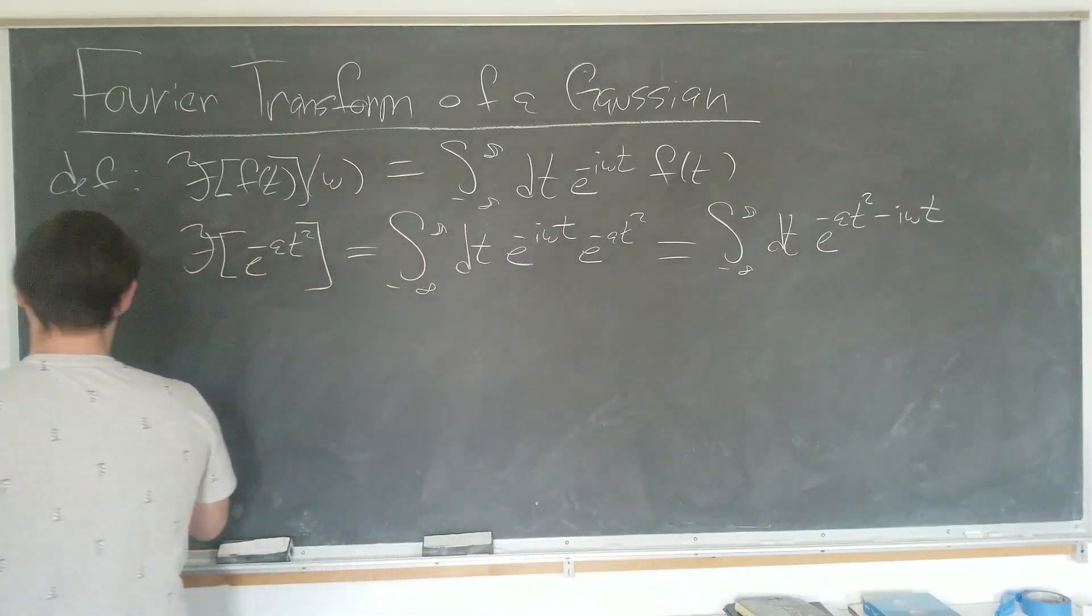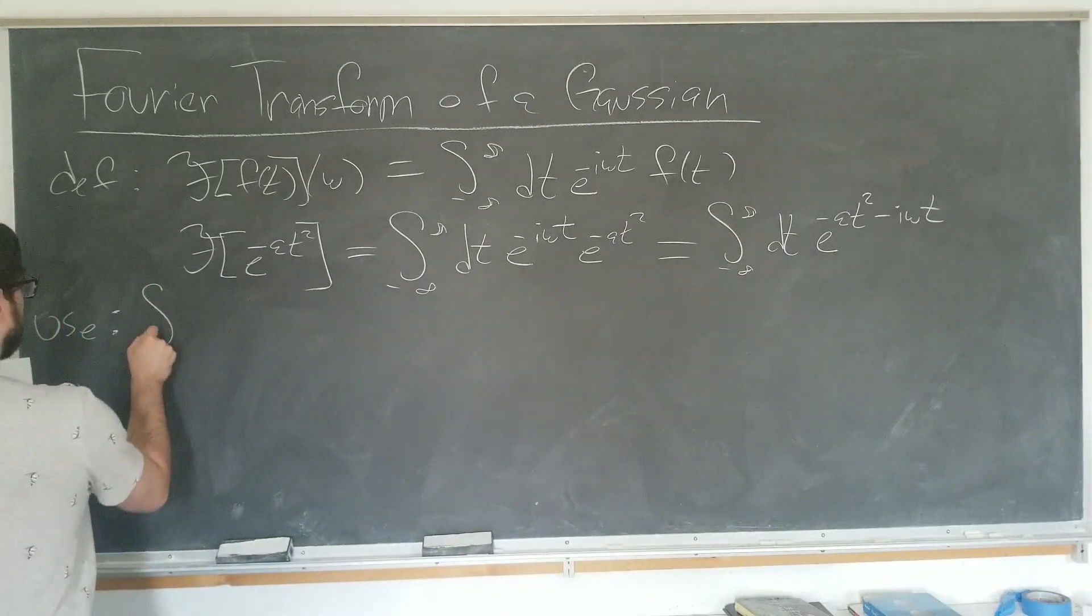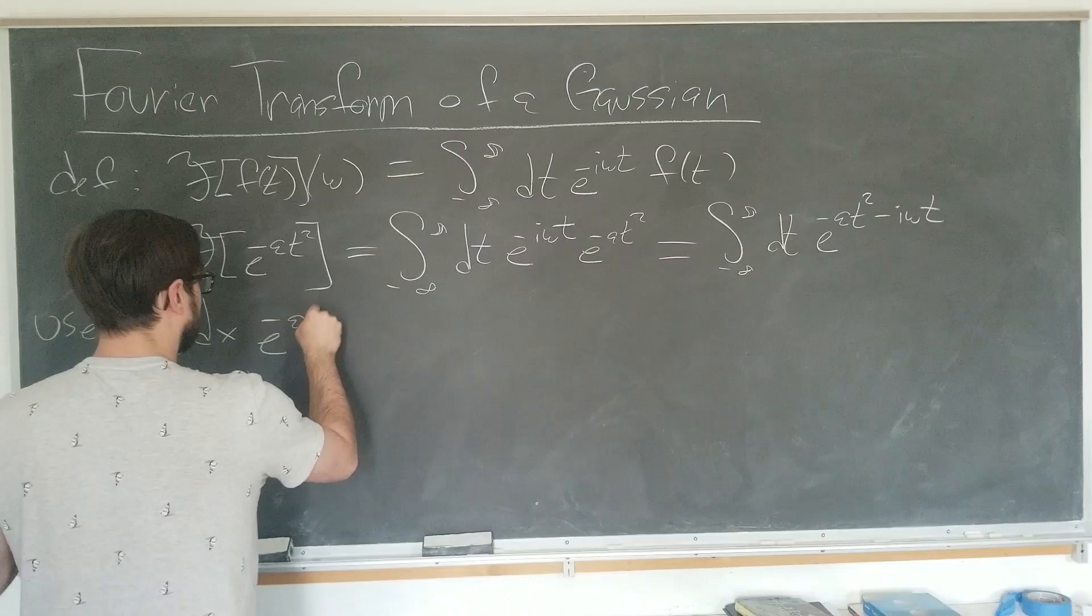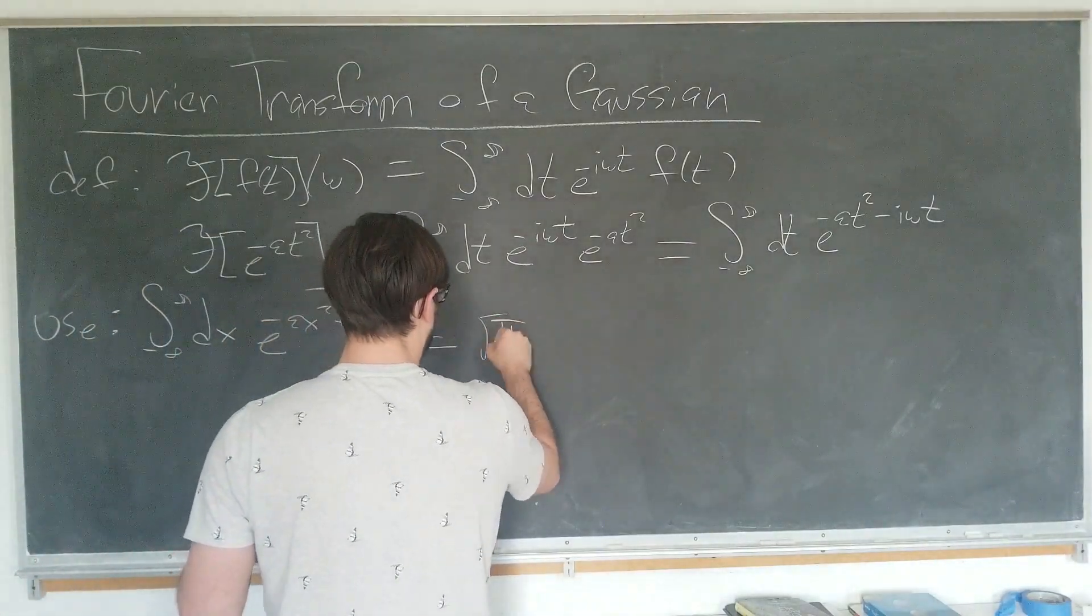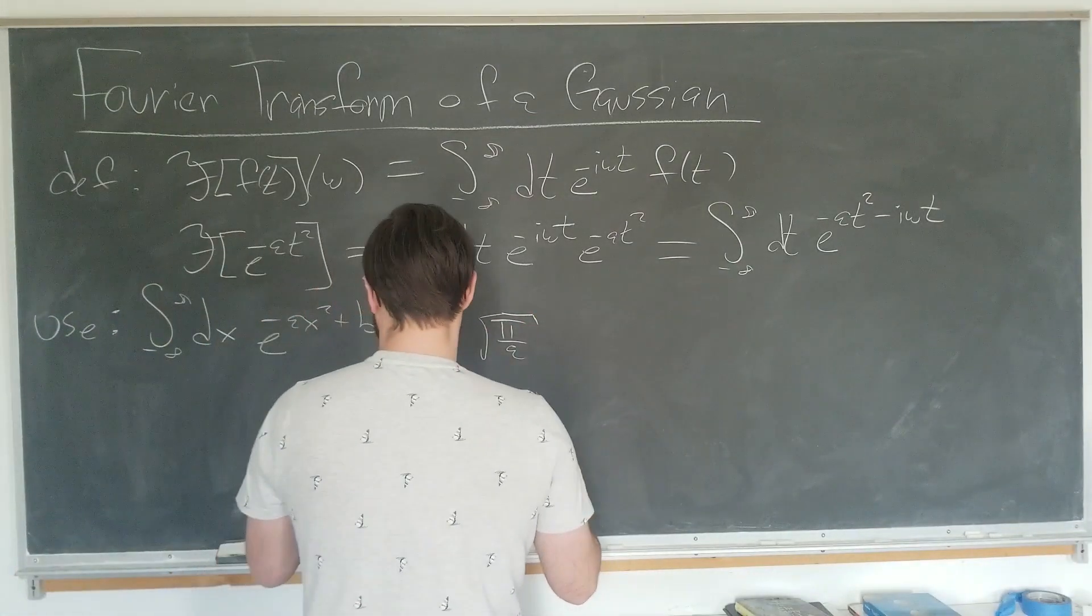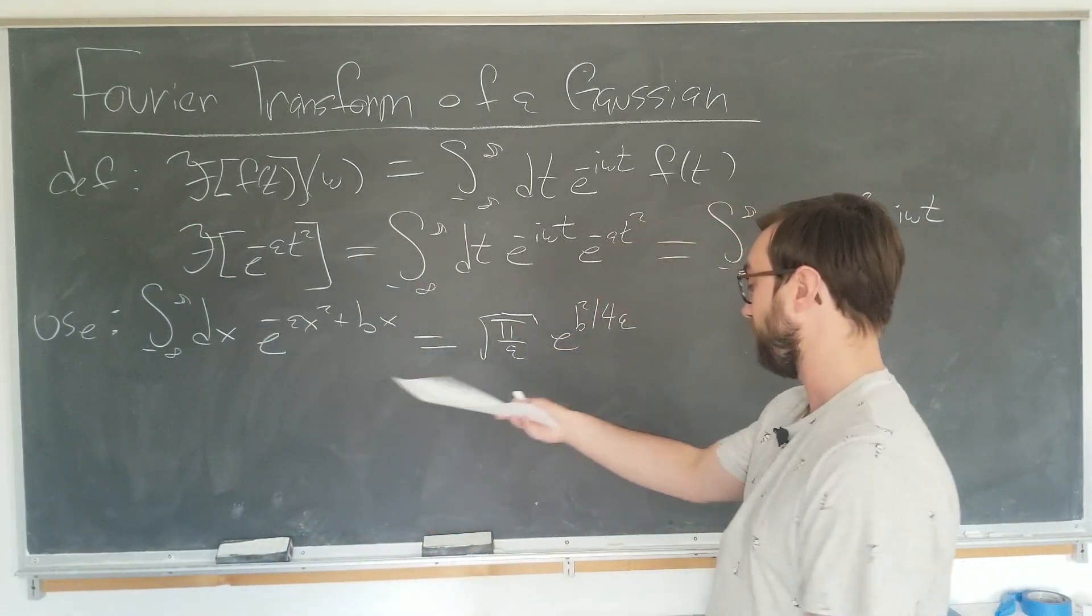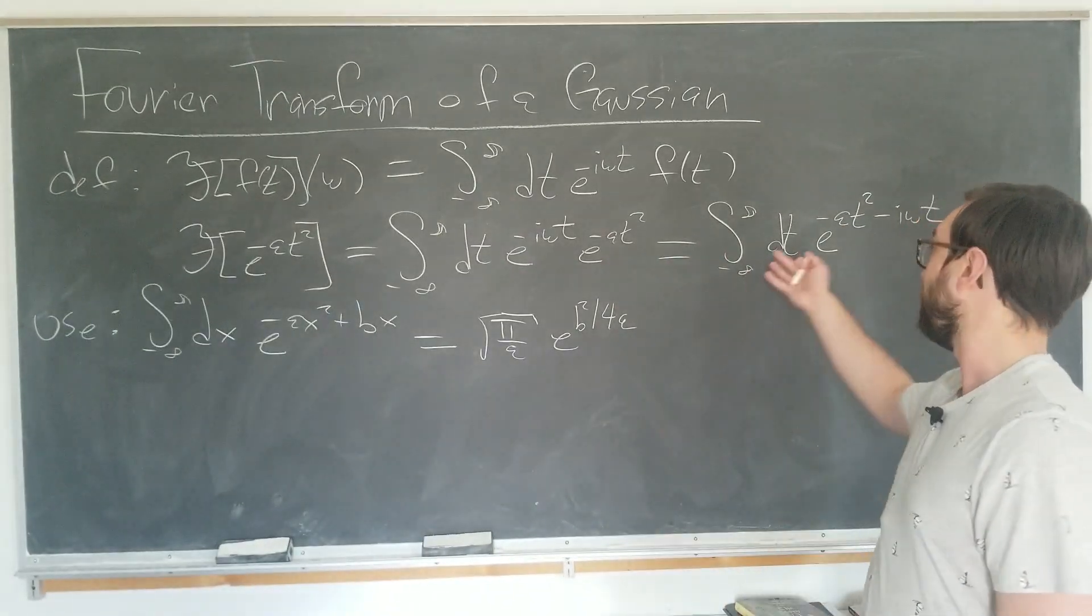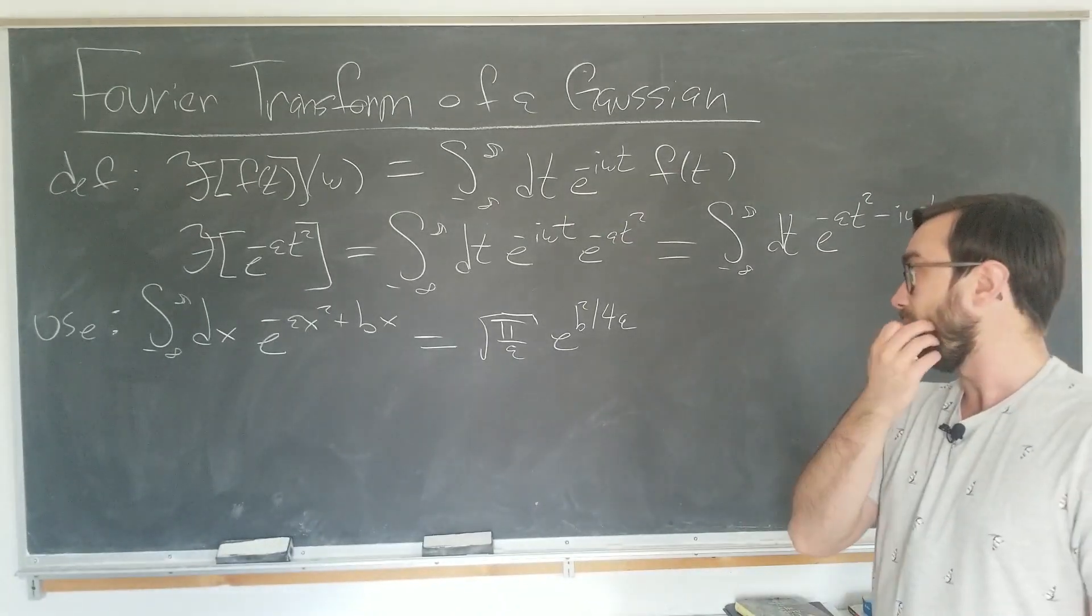We know that the integral from minus infinity to infinity respect to x of e to the minus a x squared plus bx is none other than square root of pi over a, what it would be if there was no linear term, times e to the b squared over 4a. You can derive this formula easily by completing the square. I think that's easier than trying to deal with some weird imaginary constant and try to complete the square that way. But it's up to you, really.